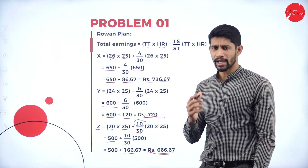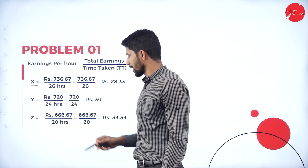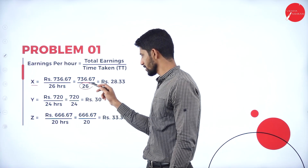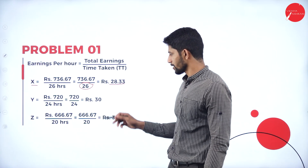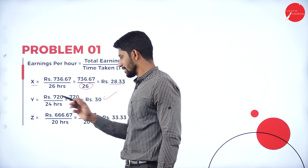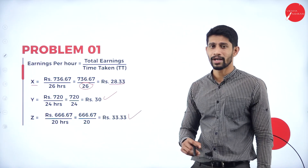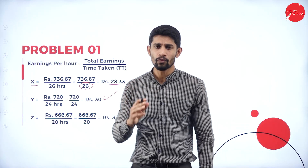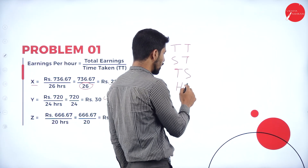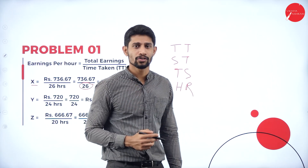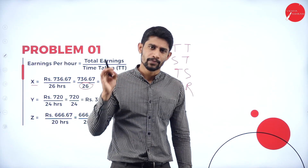Now we find out earning per hour under Rowan Plan — same formula: total earnings ÷ time taken. Mr. X: 736.67 ÷ 26 hours = 28.33 rupees per hour. Mr. Y: 720 ÷ 24 hours = 30 rupees per hour. Mr. Z: 666.67 ÷ 20 hours = 33.33 rupees per hour. So mainly you have to know 4 things and apply the correct formula for each plan.